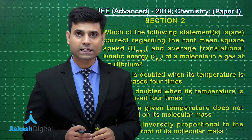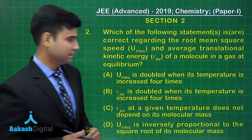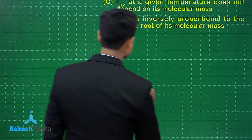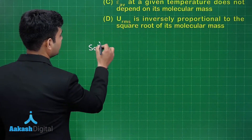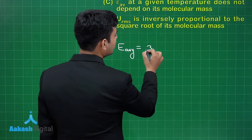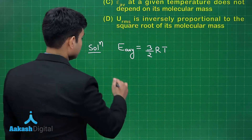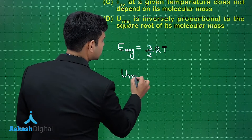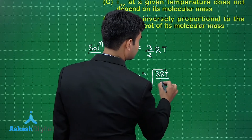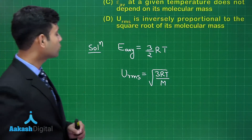This question belongs to the gaseous state — kinetic theory of gases — and it's a straightforward question. The formula for average kinetic energy E_avg equals (3/2)RT per mole of the gas. URMS equals the square root of (3RT/M), where M is the molar mass.